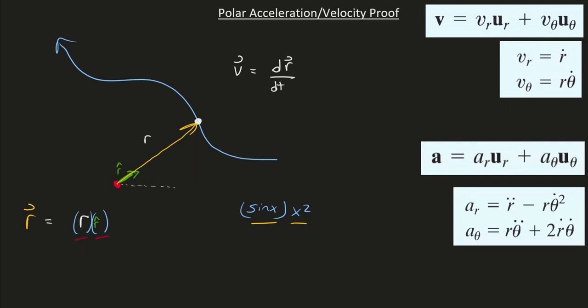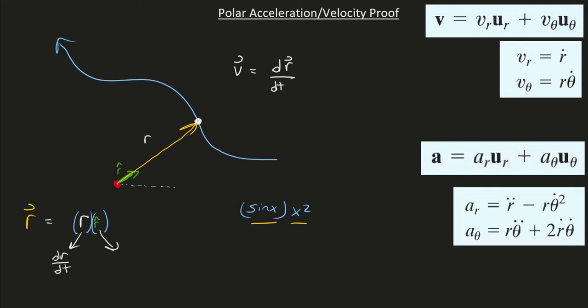Since both of these quantities change with time, we'll have to do product rule. So the derivative of r is dr/dt — r could really be an equation like √t, so the derivative of whatever that equation is. Now the derivative of r̂ is a lot harder. Remember, a derivative just means if I change time a bit, what is the resulting change? So let's say our particle moved here — my new r vector would be here, and my new r̂ vector would be there.